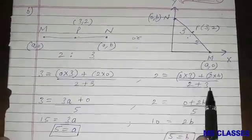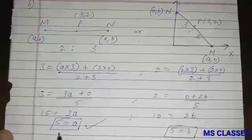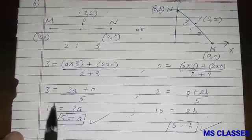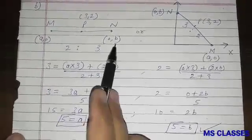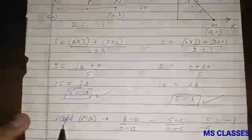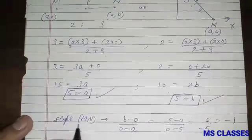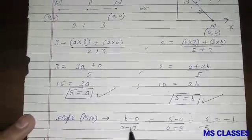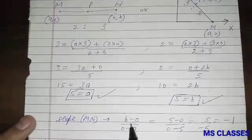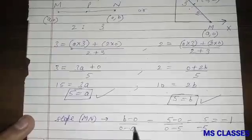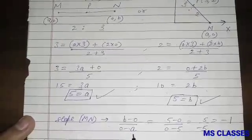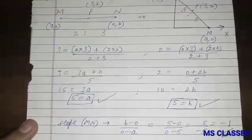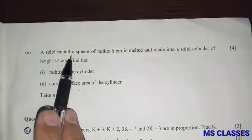Solving gives a = 5 and b = 5, so M = (5, 0) and N = (0, 5). The slope of line MN is found using (y₂ − y₁)/(x₂ − x₁). Substituting the coordinates gives slope = (5 − 0)/(0 − 5) = −1.